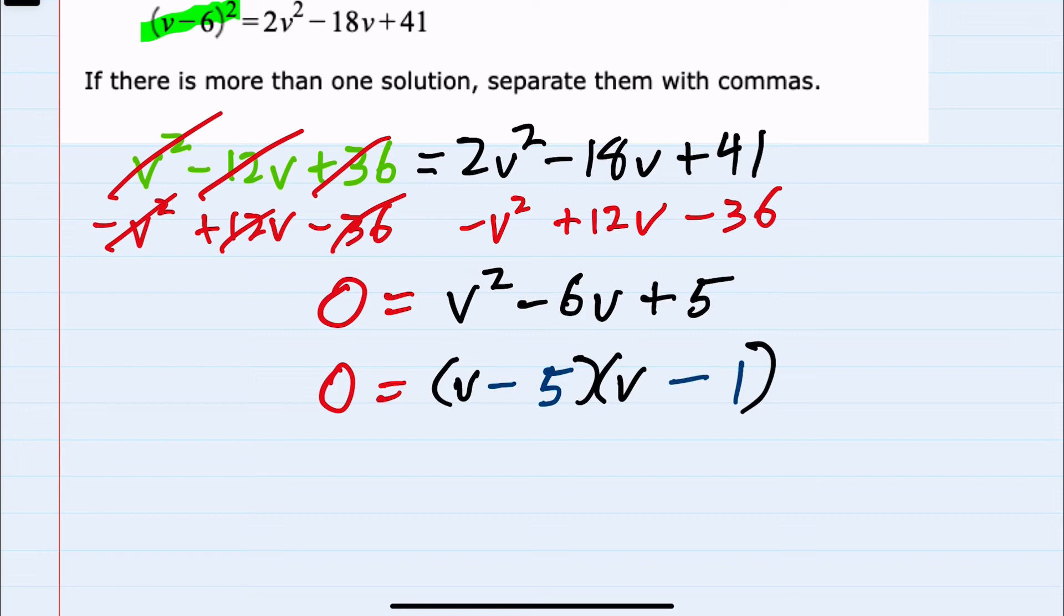So we have factored the right-hand side. And we can see here that we have two expressions being multiplied with the result of 0. And the only way that you can multiply two things and get 0 is if one of those two things is 0. So either the first term, v minus 5, will have to be 0, or the second term, v minus 1, will have to be 0.